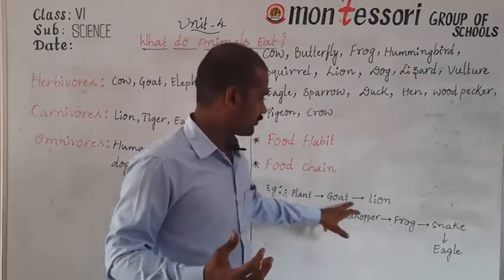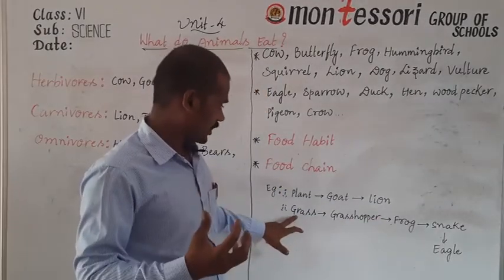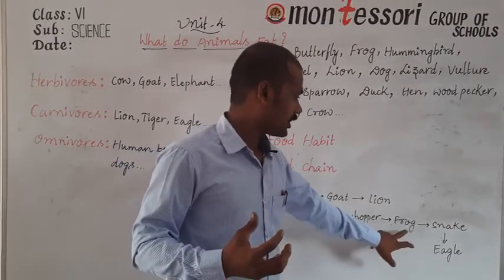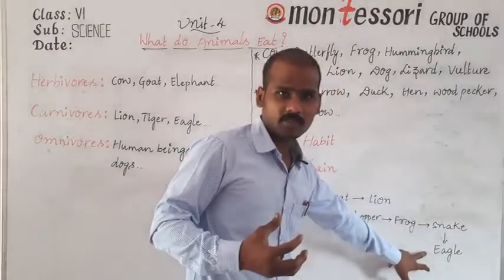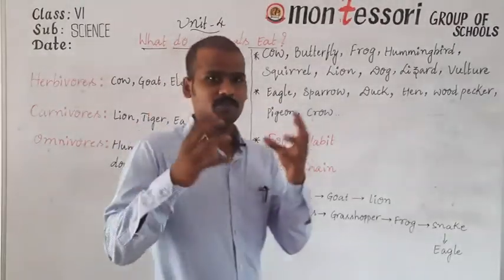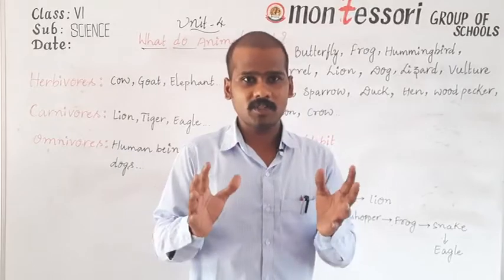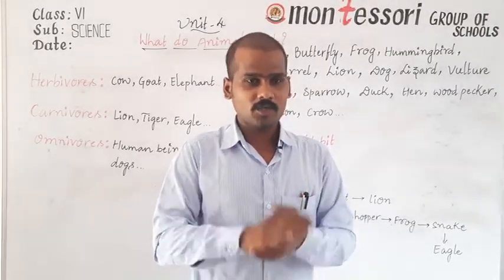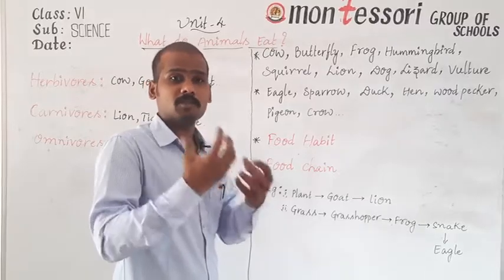This forms a food chain. For example: a plant can be eaten by a goat, and the goat can be eaten by a lion. Another example: grass is eaten by a grasshopper, the grasshopper is eaten by a frog, the frog is eaten by a snake, and the snake is eaten by an eagle. Food chain is the interconnection between different animals and birds based upon their food habits.